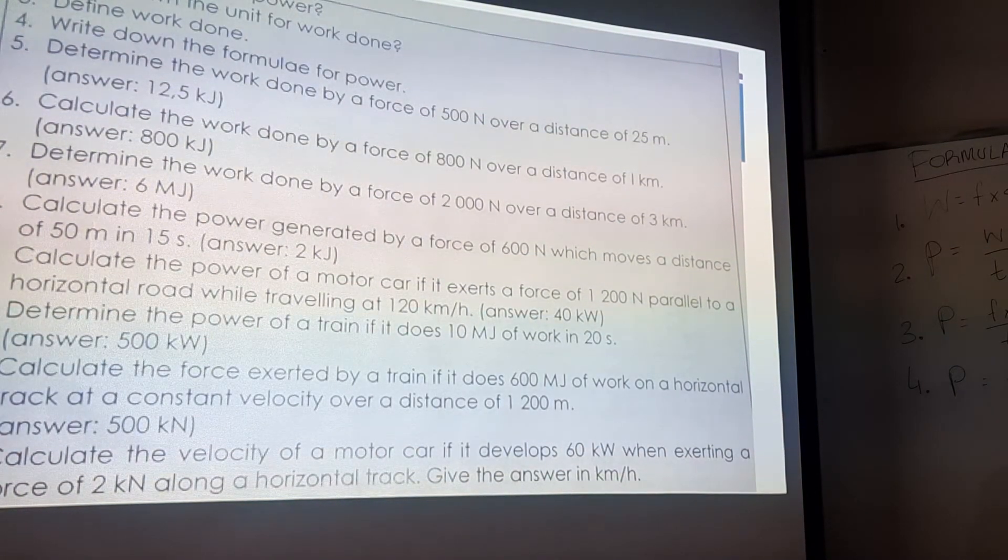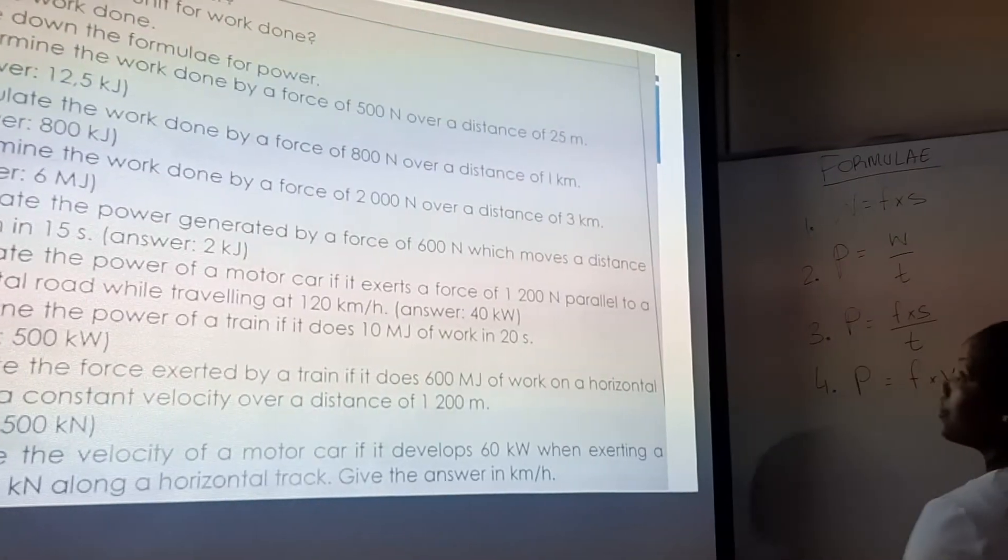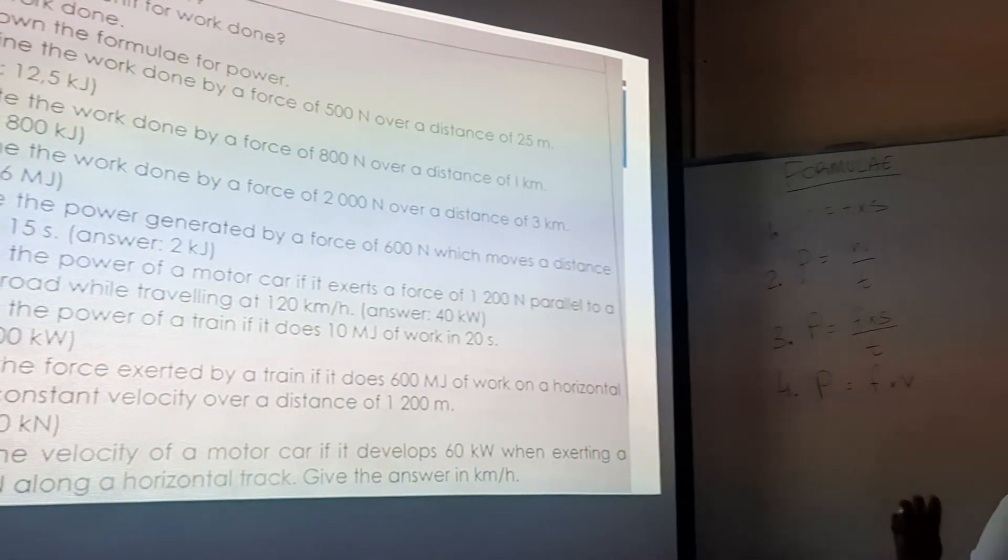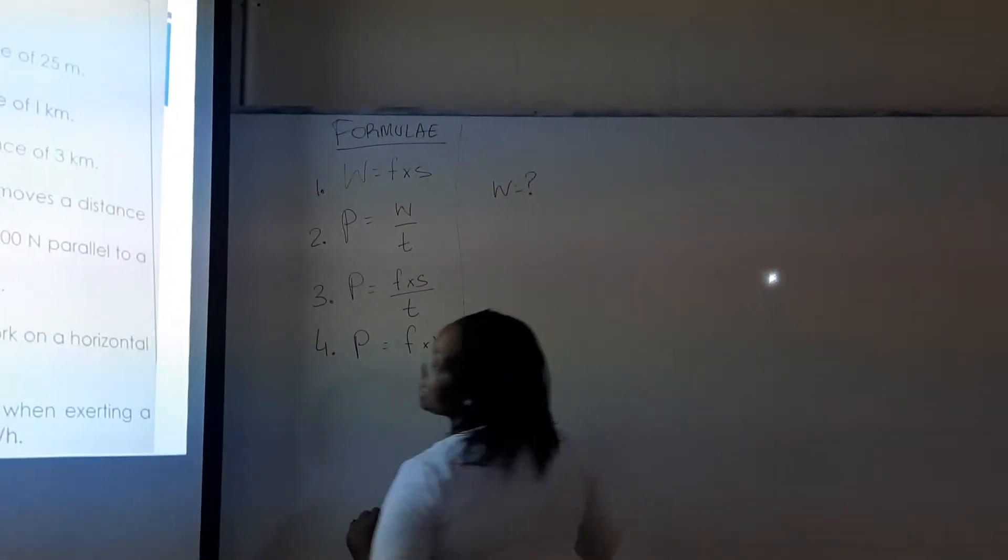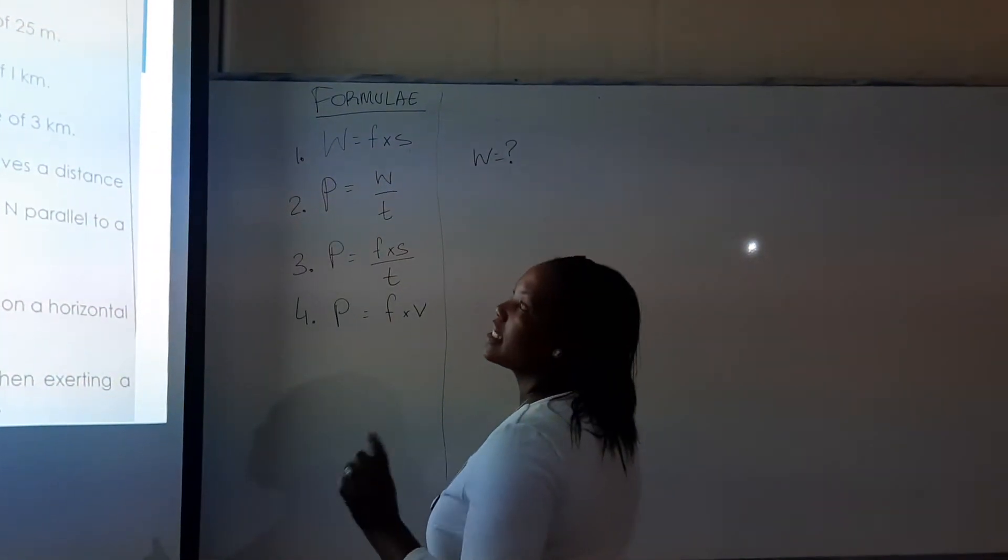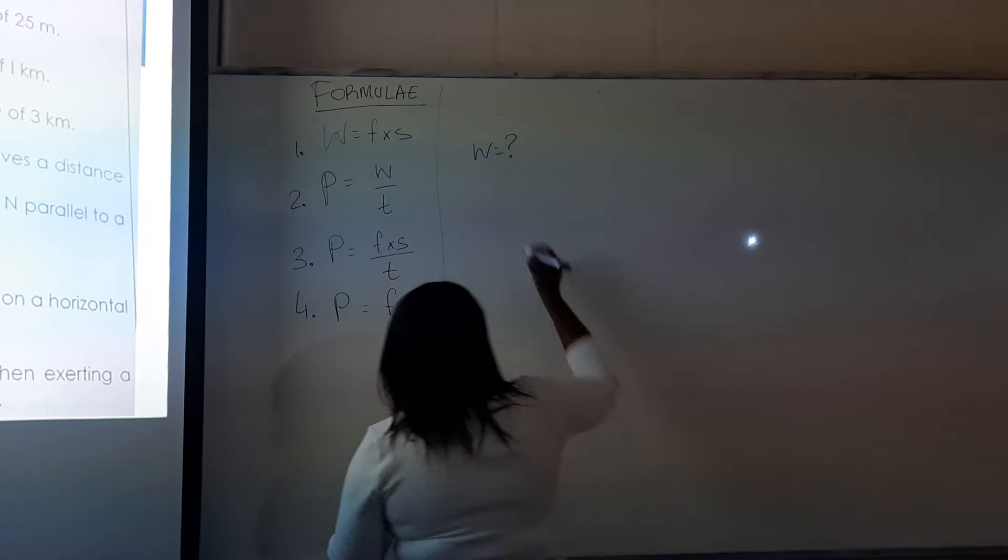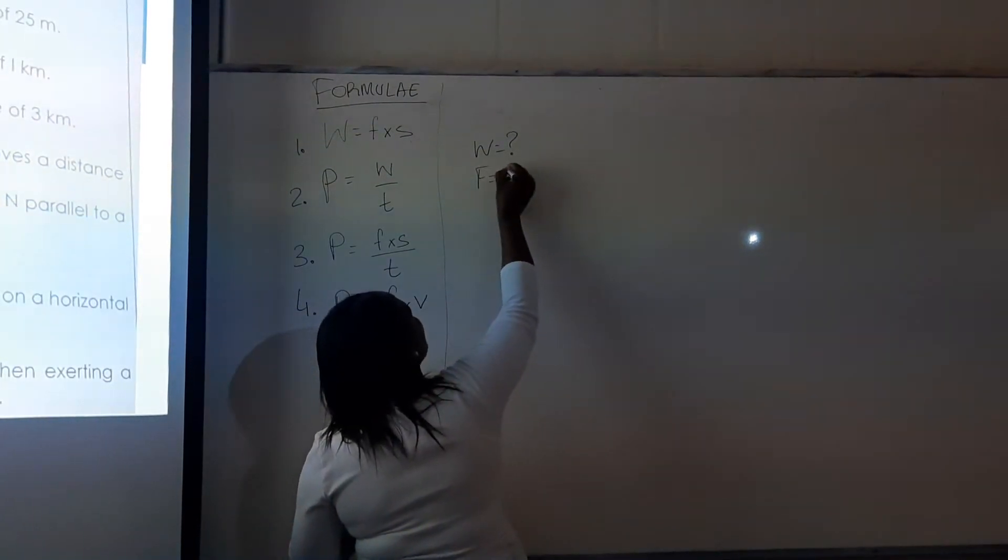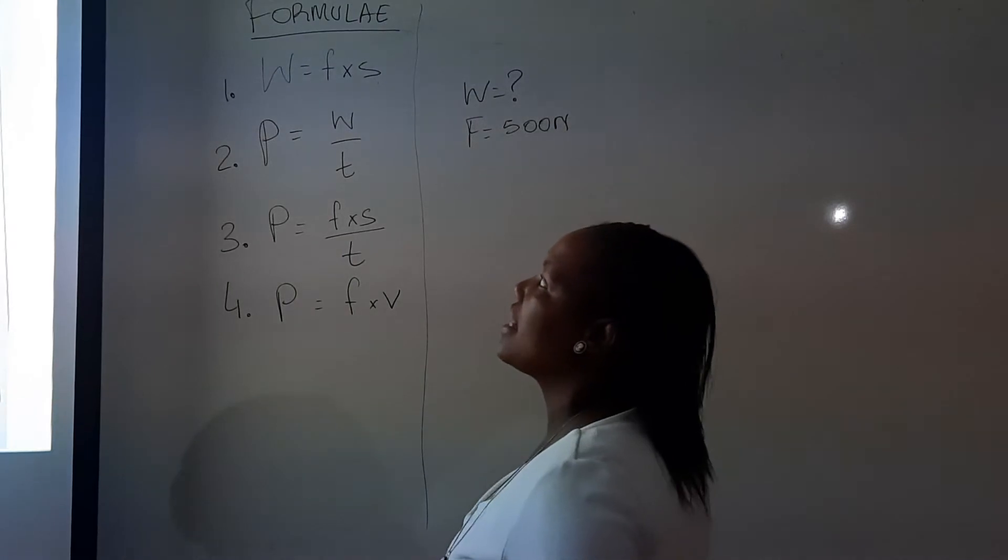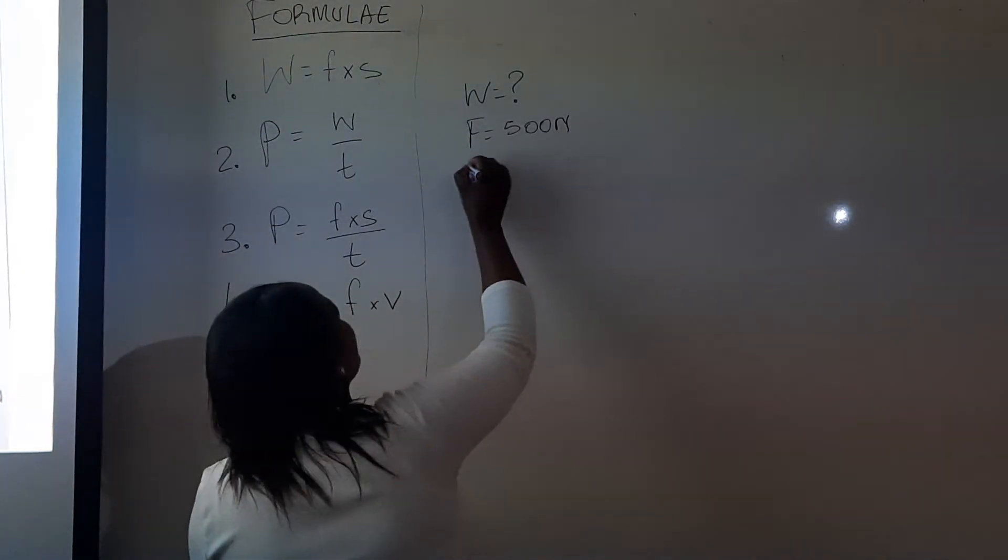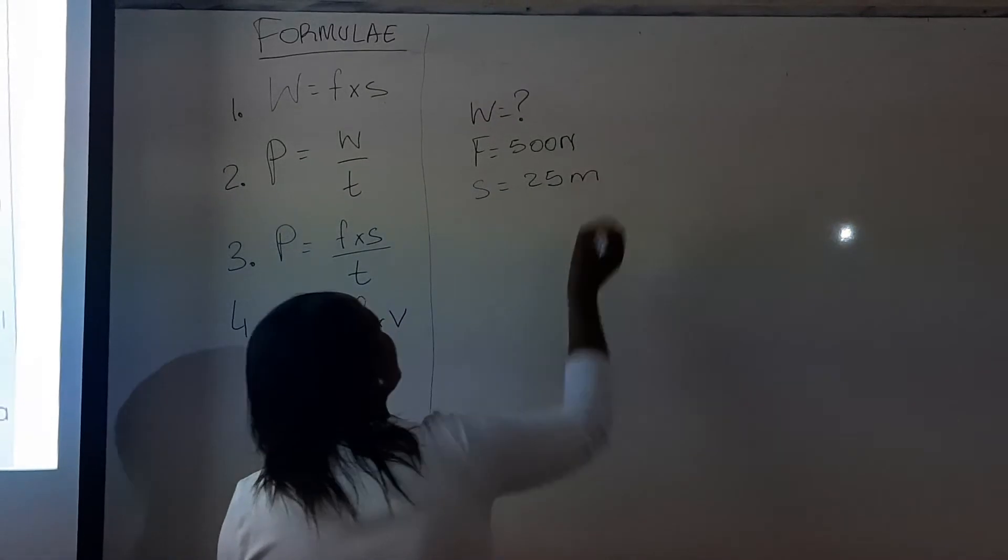determine the work done by a force of 500 newtons over a distance of 25 meters. So, our procedure says you must first write down the given information. So, the first part says determine the work done, so that means that is our unknown, the work done. And then, determine the work done by a force of 500 newtons. The force is 500 newtons over a distance of 25 meters. The distance is 25 meters.